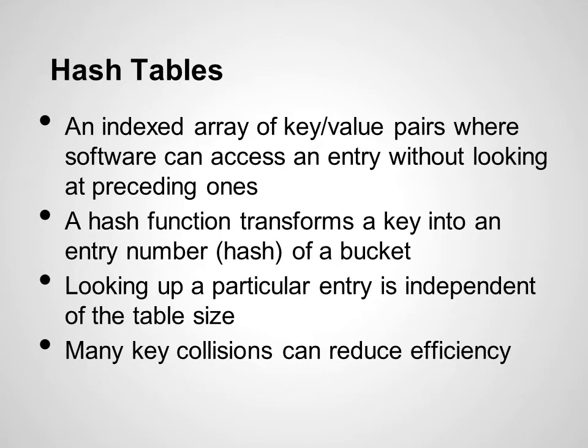Hash tables are another type of commonly used data structure. Like linear lists, they are composed of key-value pairs. Hash tables create an indexed array of these key-value pairs, where the entry number is a hash value or code generated through a hash function of the key. This means that any entry can be accessed without looking at the preceding entries, as long as the particular key contained by the entry is known. Searching for any entry in a hash table is a constant time operation, independent of the table size. This only works, however, so long as no two keys collide and are assigned to the same location, which would greatly reduce efficiency as the system would have to continue its search in alternate locations.